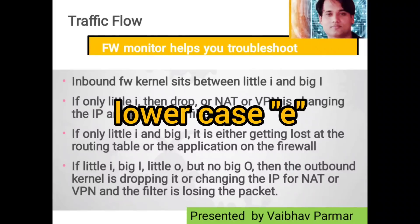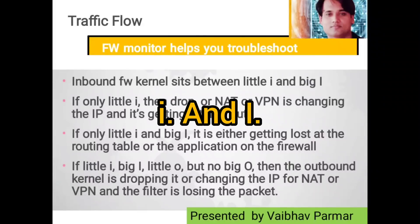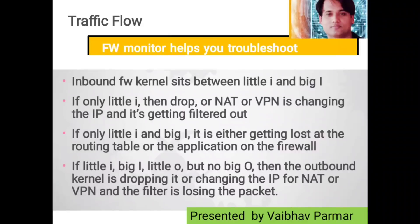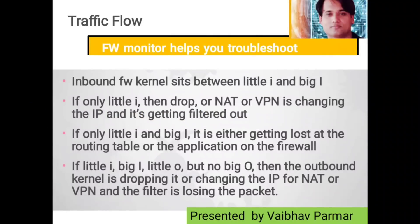Or if you have a VPN configured and the packets are from the VPN tunnel, then you have to check if the VPN connection settings are changing or if the IP is getting filtered. If you are seeing both small 'i' and big 'I', then the packet is passing to pre-outbound — it means the packet is either getting lost at the routing table or in some application of the firewall. And lastly, if you see small 'i', big 'I', and small 'o' but no big 'O', the outbound kernel is dropping that packet — you have to consider whether a NAT IP change or a VPN configuration is causing the issue.